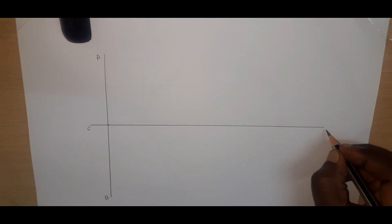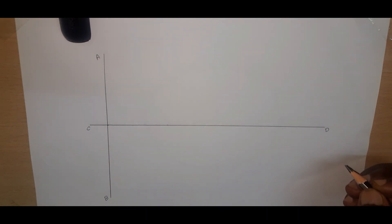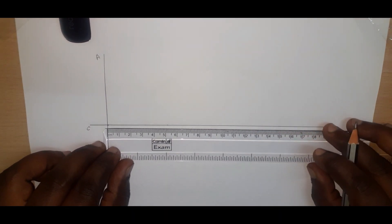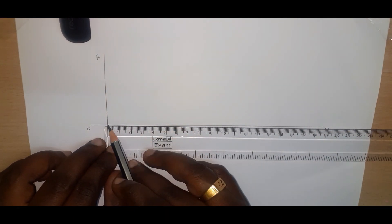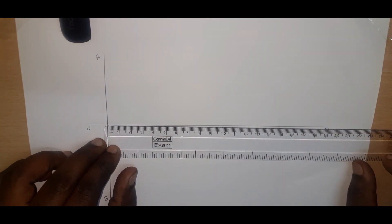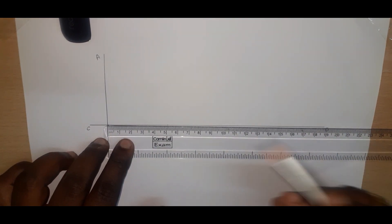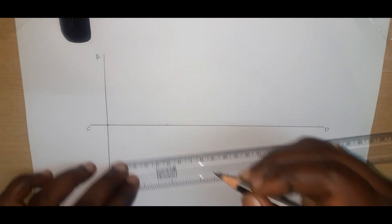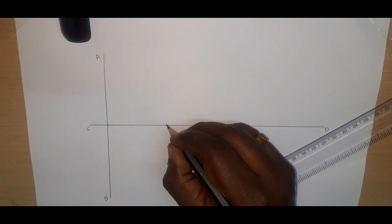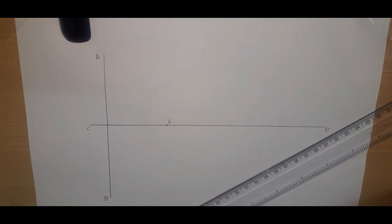This point is C and this point is D, as what we did in ellipse. Now I am going to mark the distance between the directrix. This line is the directrix and we are going to find out the focus at 50 mm. This point we can say is F, so we got the focus.